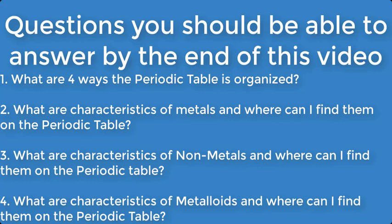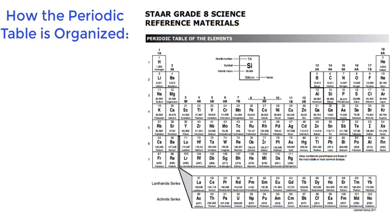Number three, what are characteristics of non-metals and where can I find them on the periodic table? And finally, number four, what are characteristics of metalloids and where can I find them on the periodic table?